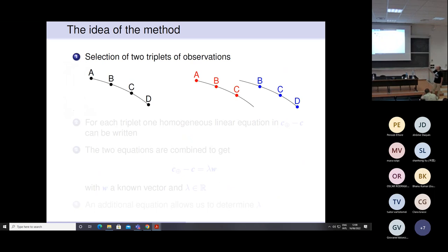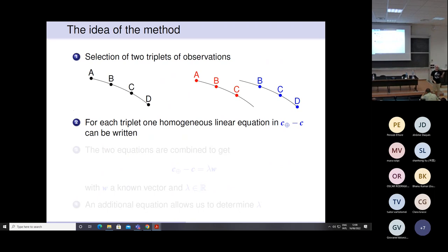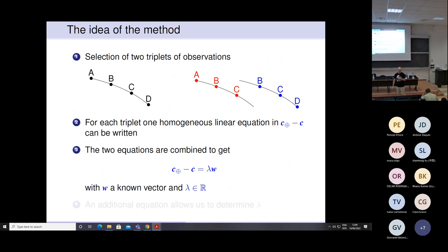Let me give an introduction to the method. As I said, it uses four observations. The idea is to consider two different triplets of observations — for example triplets (A, B, C) and (B, C, D). For each triplet, we are able to write a linear equation in the unknown vector. The two resulting equations determine the direction of the unknown vector, and we need an additional equation to find lambda, the scalar quantity which determines the magnitude of the unknown vector.